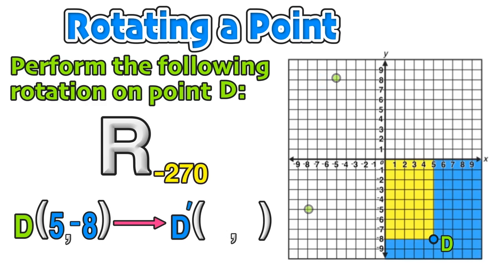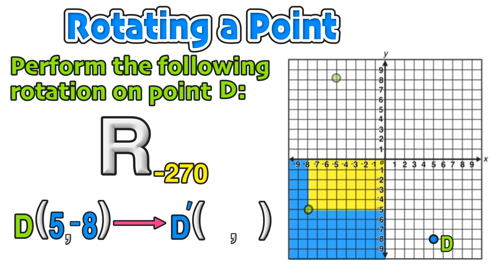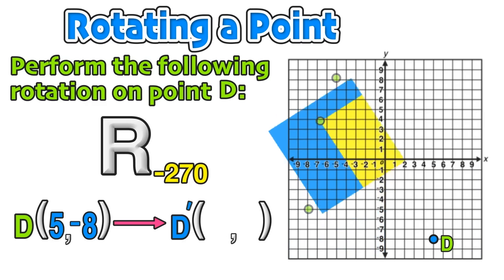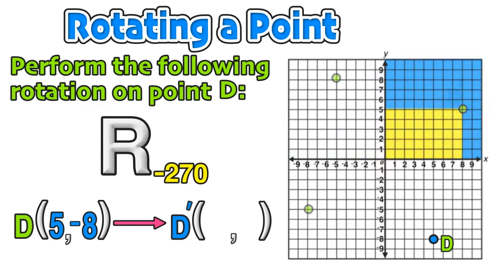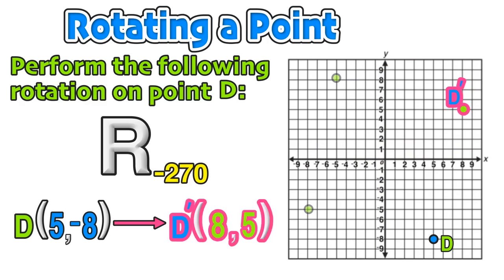For a negative 270-degree rotation, we again start with D in the fourth quadrant. One quarter turn is negative 90, a second quarter turn is negative 180, and we need one more third quarter turn to get to negative 270, with image D′ at (8, 5).